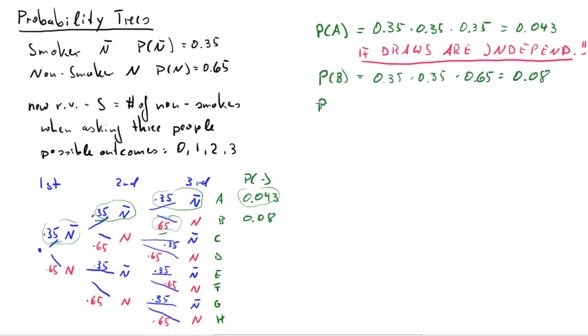Now exactly the same probability we get also for outcome, for instance, let's pick outcome E. Here we first pick a non-smoker, then a smoker, then a smoker. So the probability is 0.65 times 0.35 times 0.35. That's 0.08 again.